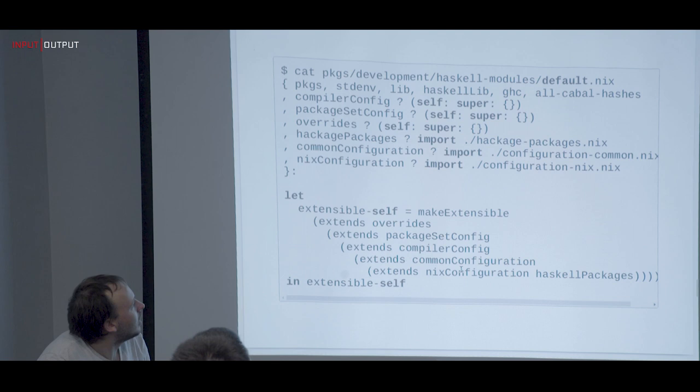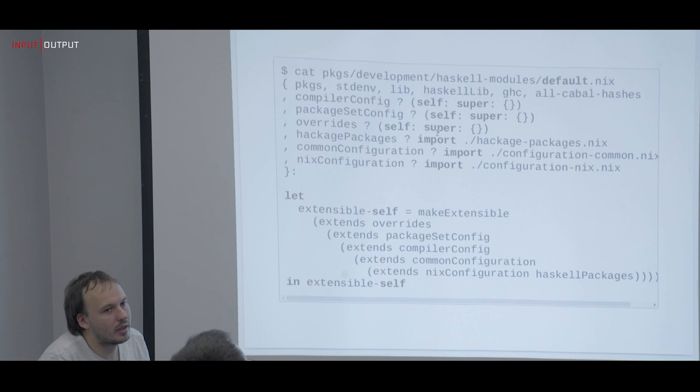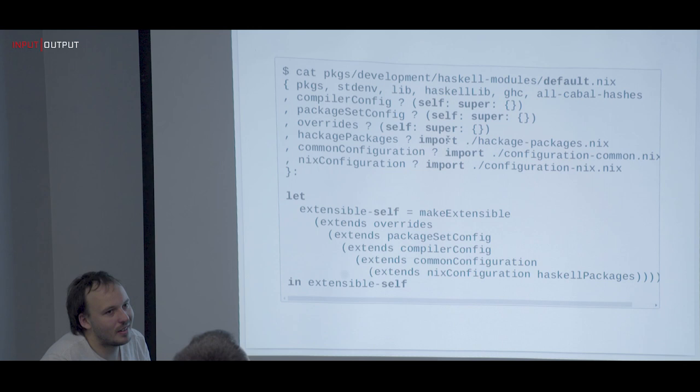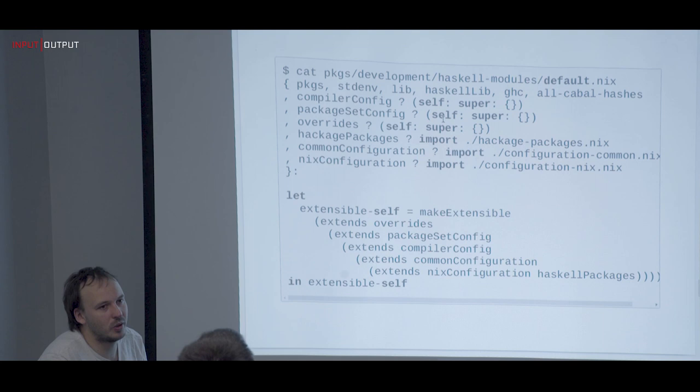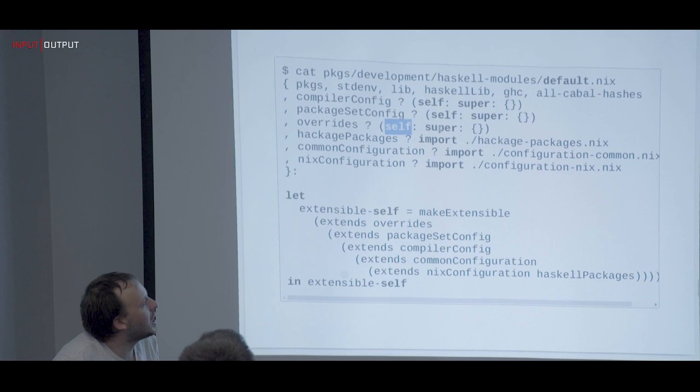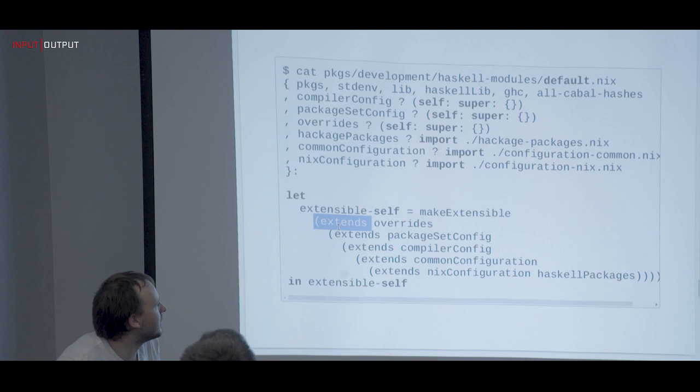It's a lambda with two arguments — `self` and `super` — not one lambda taking another. `makeExtensible` and `extends` use the fixed point to pass in the previous set and then the set itself through a fixed point. At the end, you say I want Haskell packages with compiler 8.0.2 — for each compiler, we take Hackage and pass the compiler in to create a new package set. You get this package set by saying `packages.ghc802` and then you override it with your own overrides.